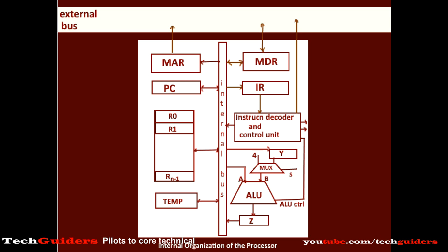We are now discussing the processing unit and what is going on inside the processor. The processor executes a program residing in the main memory by fetching individual instructions into it. The first instruction corresponding to a program is fetched into the processor, kept in the instruction register, decoded, executed, and the results written back. Then the next instruction is fetched to the instruction register, decoded, executed, and so on.